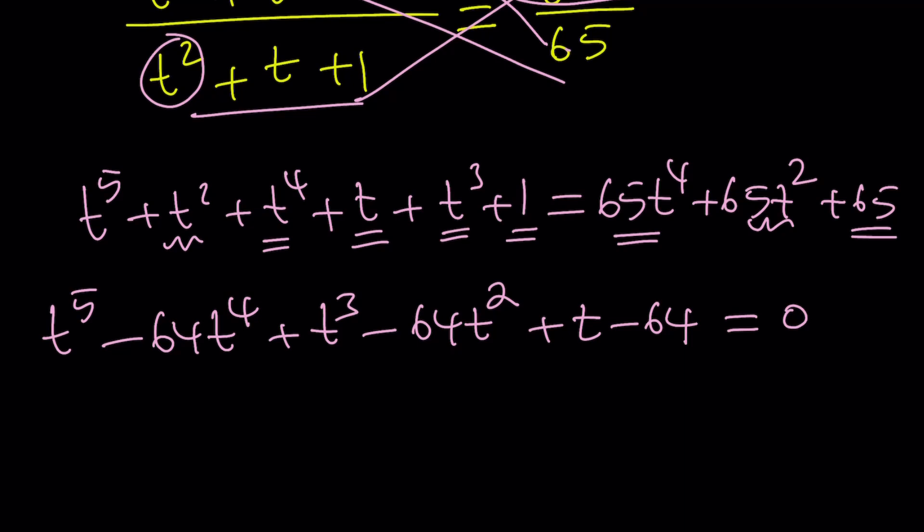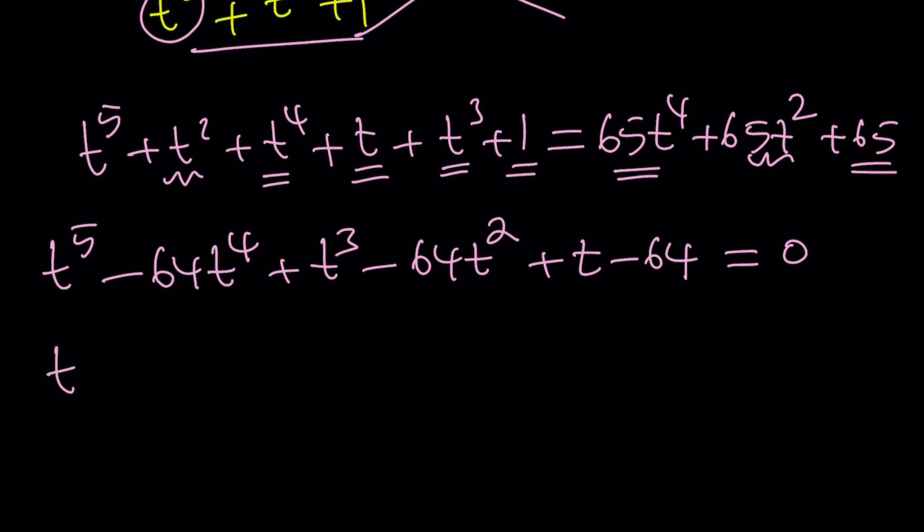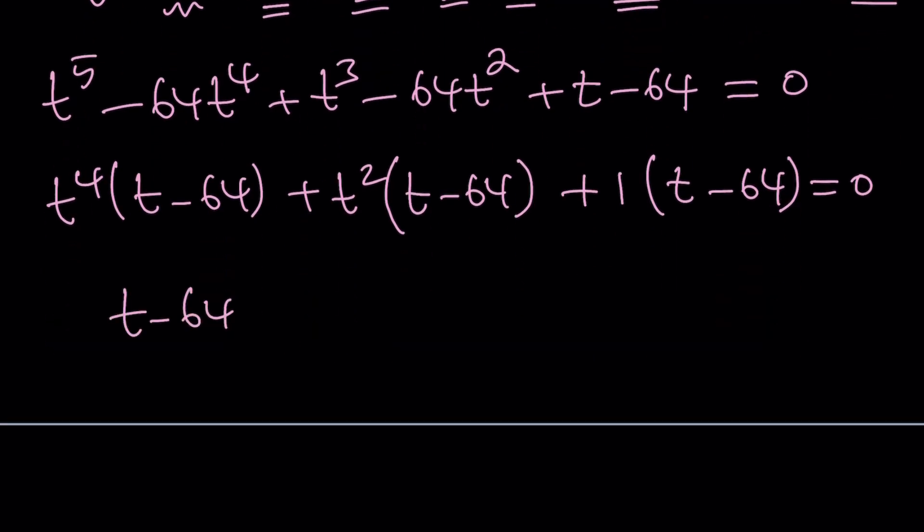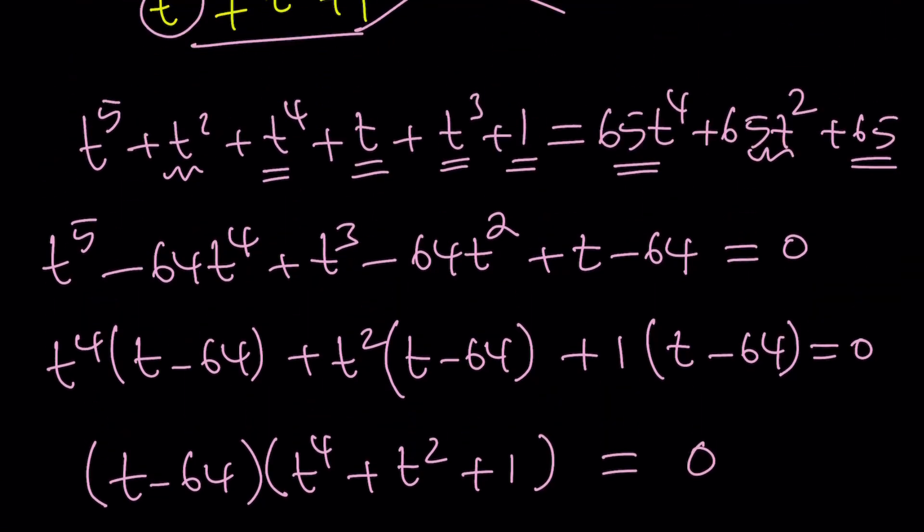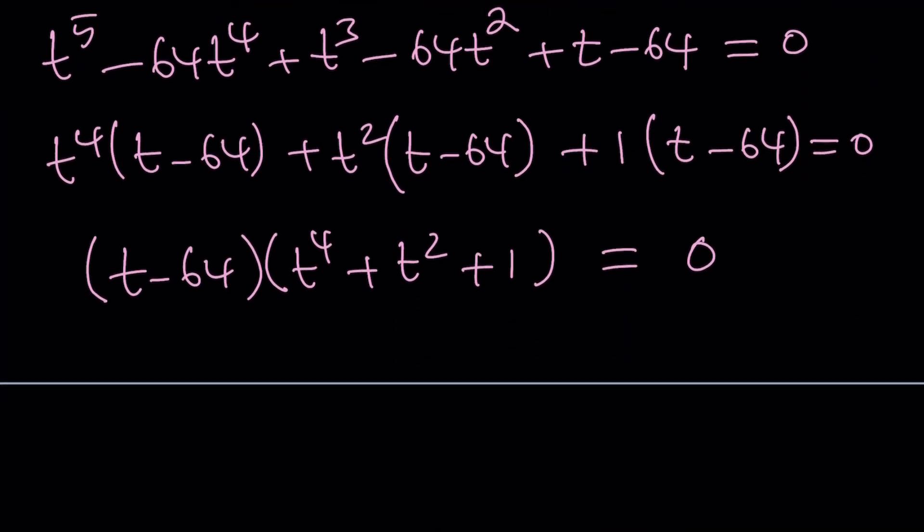Great. Now this equation looks kind of interesting because of the repetition of a pattern. Notice that if you group these terms, they're probably going to be factorable. Take a look at the first two terms. If you take out t to the fourth, then you'll have t minus 64 plus t squared times t minus 64 plus 1 times t minus 64. Now notice that t minus 64 can be taken out. And then the other factor is going to give us t to the fourth power plus t squared plus 1 equals 0. So it wasn't as bad as I expected it to be.